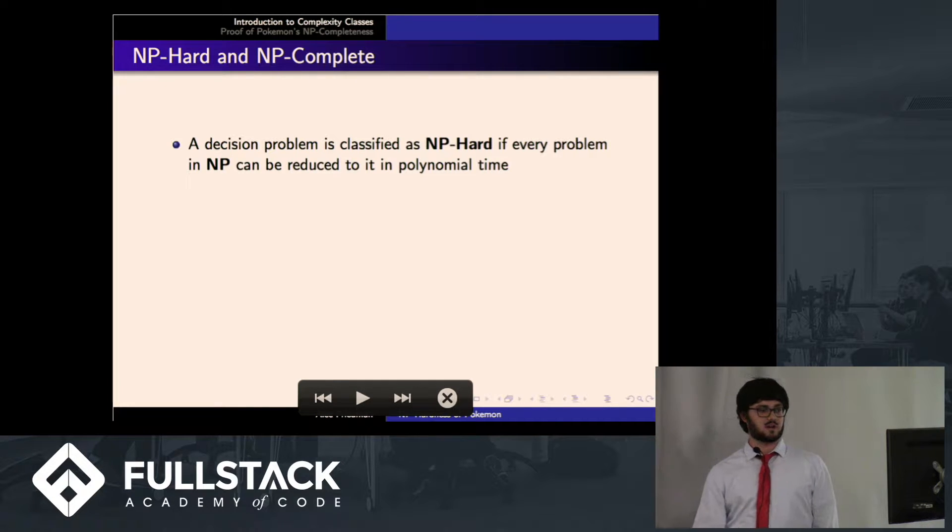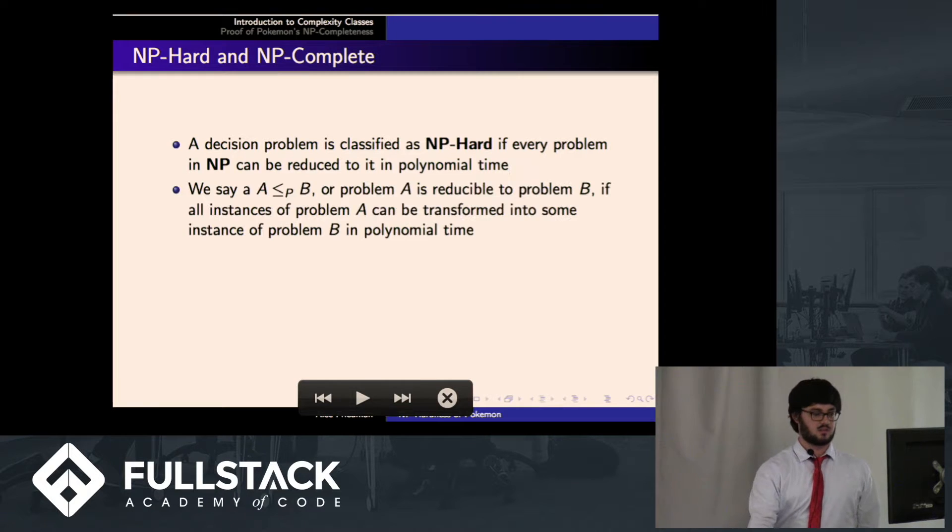So now we can talk about NP hard and NP complete. A decision problem is classified as NP hard if every problem in NP can be reduced to it in polynomial time. So what does it mean to reduce a problem? We say that A less than or equal to subscript P B, or problem A is reducible to problem B if all instances of problem A can be transformed into some instance of problem B in polynomial time.